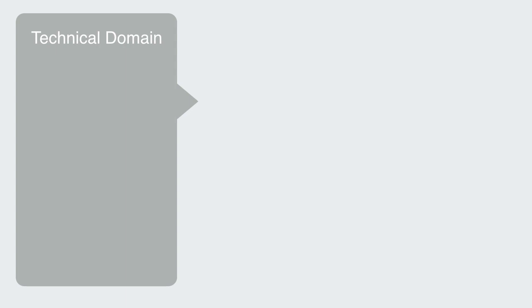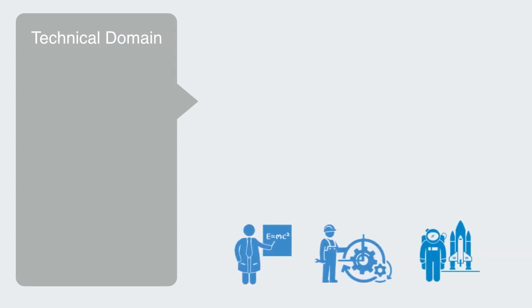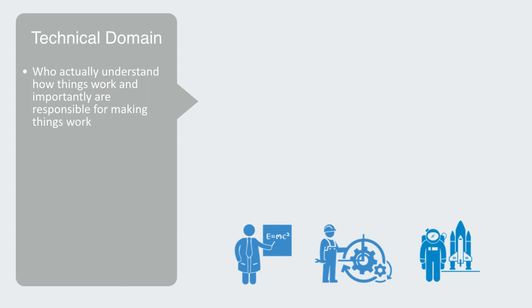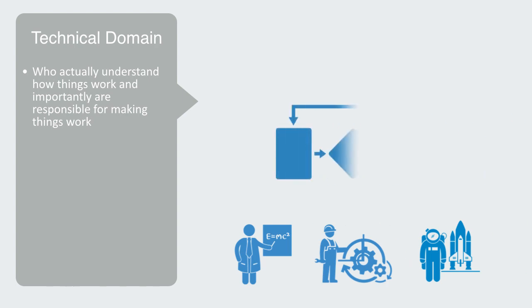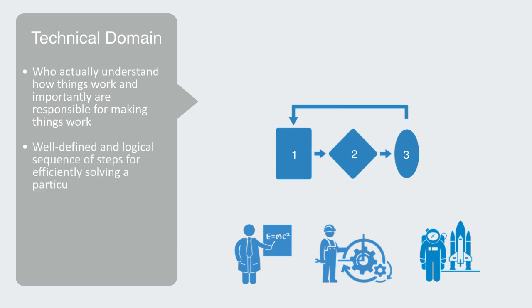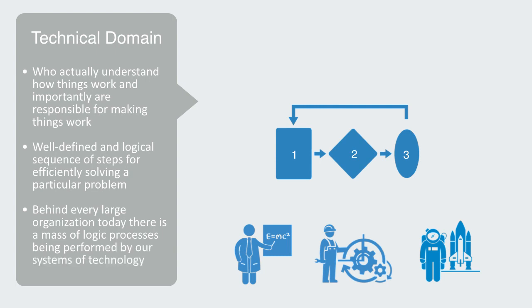The technical domain is conceived of and designed by a relatively small number of scientists and engineers who actually understand how things work, and importantly are responsible for making things work. Most of society has very limited understanding of this and largely takes these technologies for granted. Technology is the product of a process of rationalization, through which we come to a well-defined and logical sequence of steps for effectively solving a particular problem, and then embody this in some physical object or work process. Behind every large organization today there is a mass of logic processes being performed by our systems of technology.